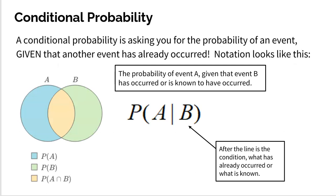A conditional probability is asking you for the probability of an event given that another event has already occurred. Another event has already occurred, and that's where we get a condition. There's a condition given because of this event that has already occurred.